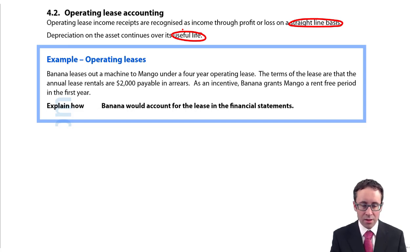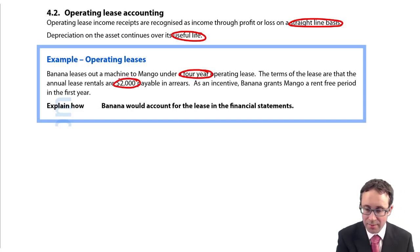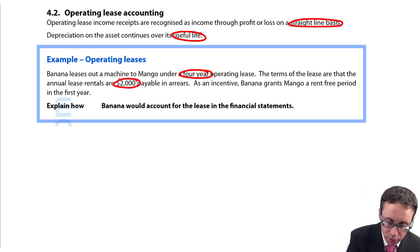In terms of the lease, there are annual lease rentals of $2,000 payable in arrears. So we have four years with $2,000 in the payments, and then as an incentive Banana the lessor grants Mango a rent-free period in the first year.